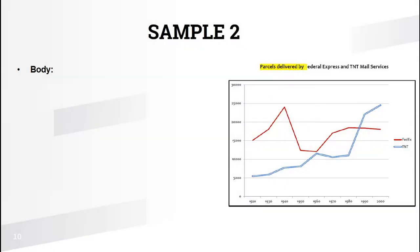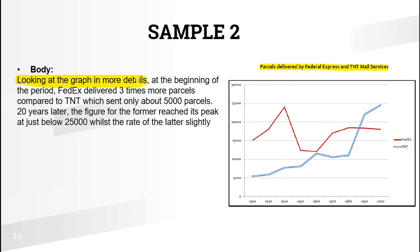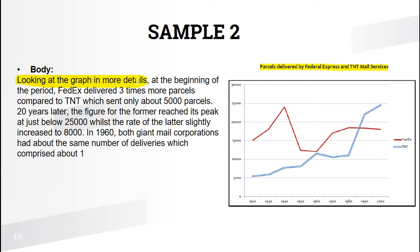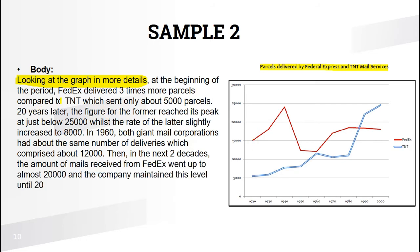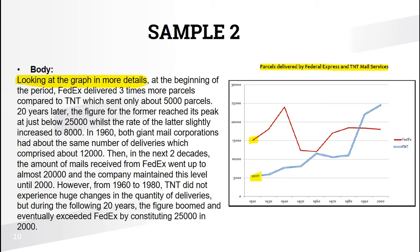Let's go to the second body paragraph about parcels delivered by FedEx and TNT mail services. Again, I start the body the same way: 'Looking at the graph in more detail' — because in the overview and introduction you don't usually discuss details, so the body paragraph is the place for that. At the beginning of the period, FedEx delivers 3 times more parcels compared to TNT, which sent only about 5,000 parcels, while FedEx delivered 15,000.